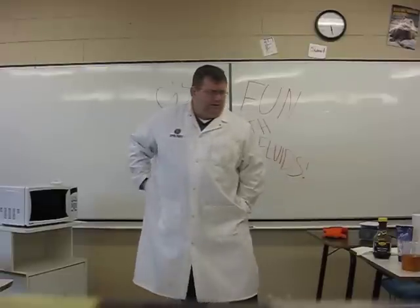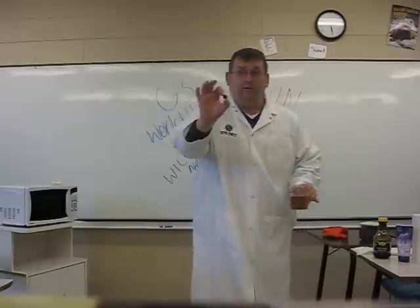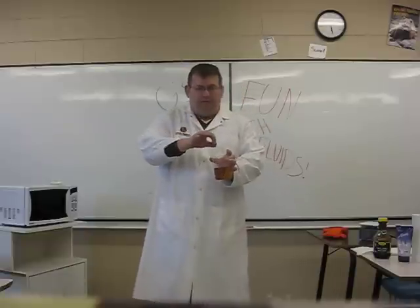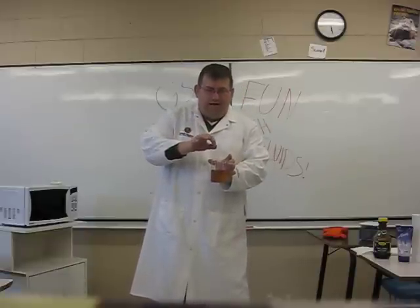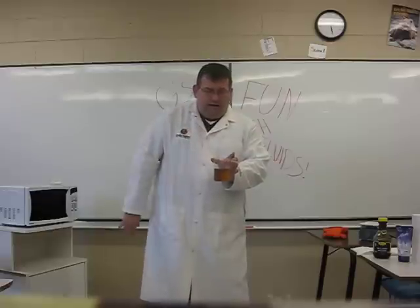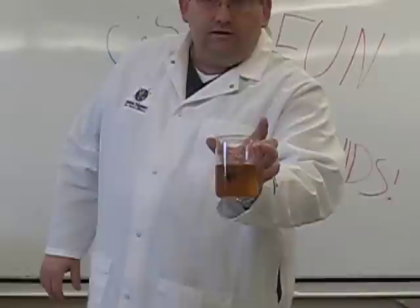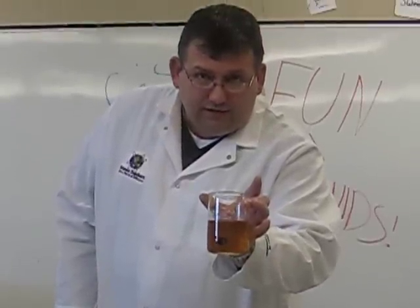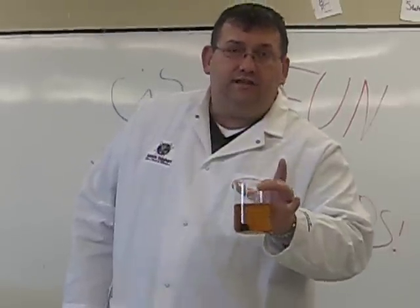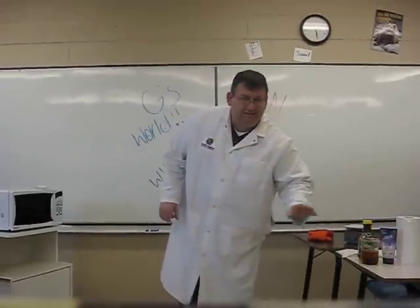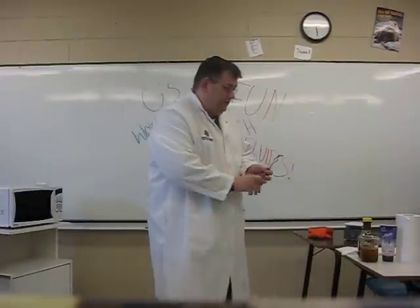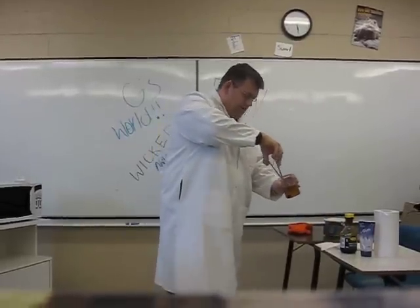In my pocket I have a marble, and we have a beaker full of honey. So if we take the marble and we drop it in the beaker, we will see how fast this marble is able to fall. As we can see very clearly, the marble does not fall very fast. The reason for that is because the honey has a high viscosity. Viscosity is the resistance of an object to flow.